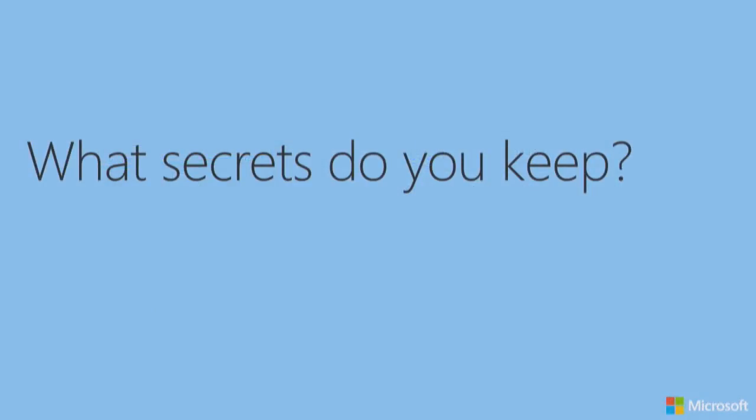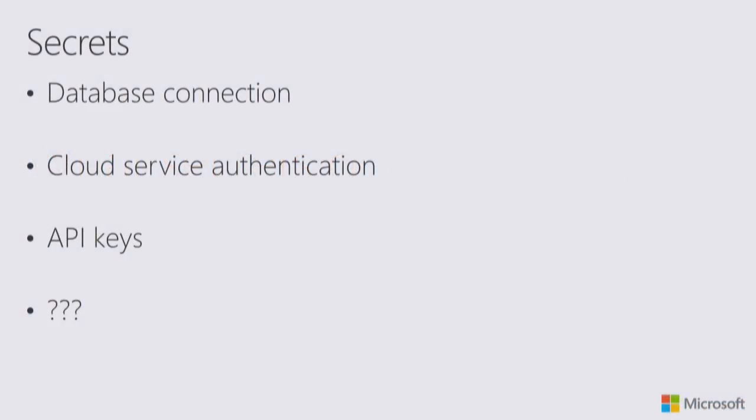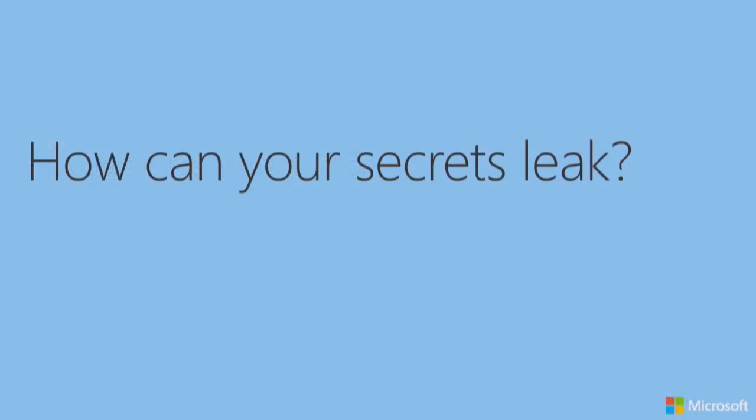I want to talk to you about secrets and how you keep those secrets safe and secure. What secrets do you keep when you program? Here's my list of things I typically do. I connect to databases, so I need a database credential. I connect to Azure Cloud Services; in the past I connected to Amazon Web Services, so I need credentials for that. The previous speaker spoke about Moodle, and that will be another example — if you want to store your credentials for connecting to Moodle, how do you do that in R without leaking that?